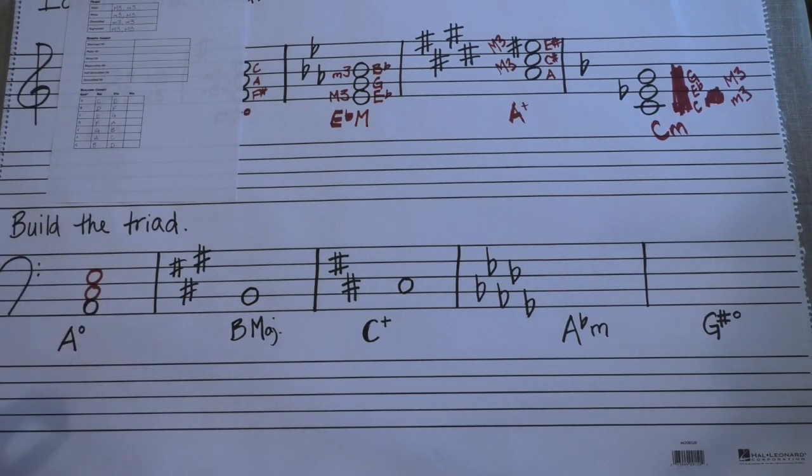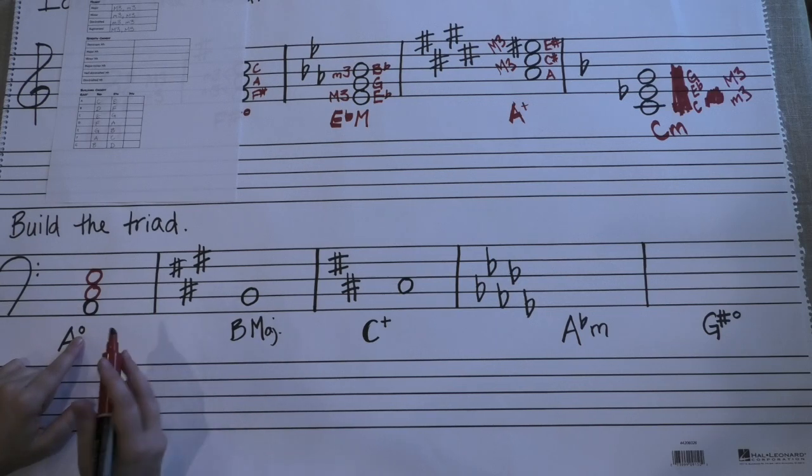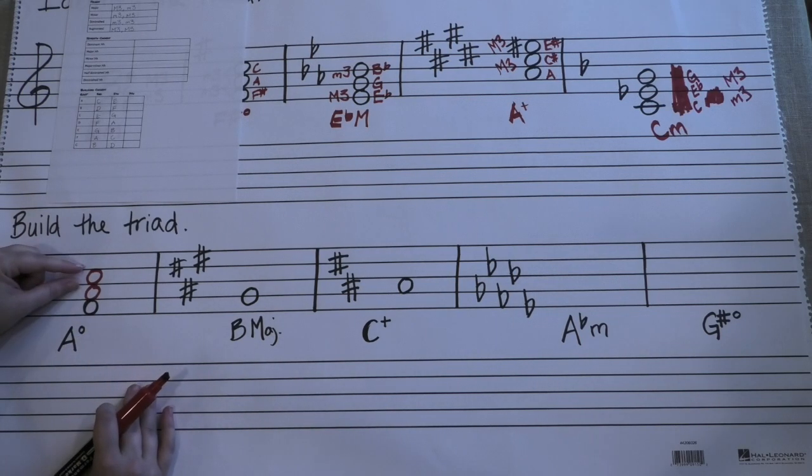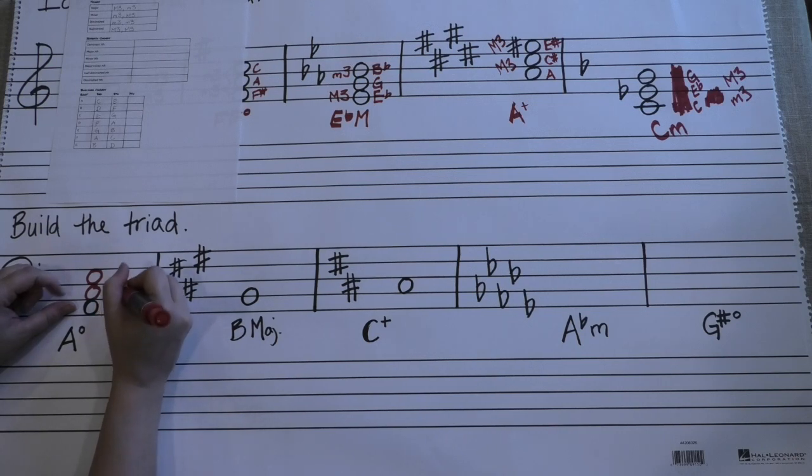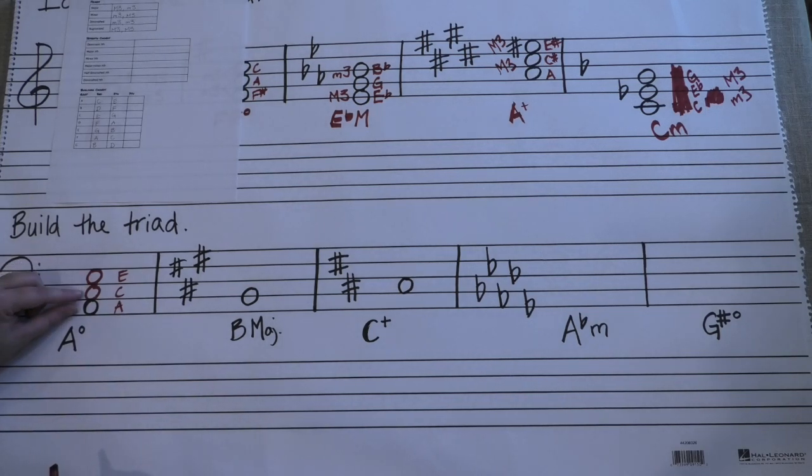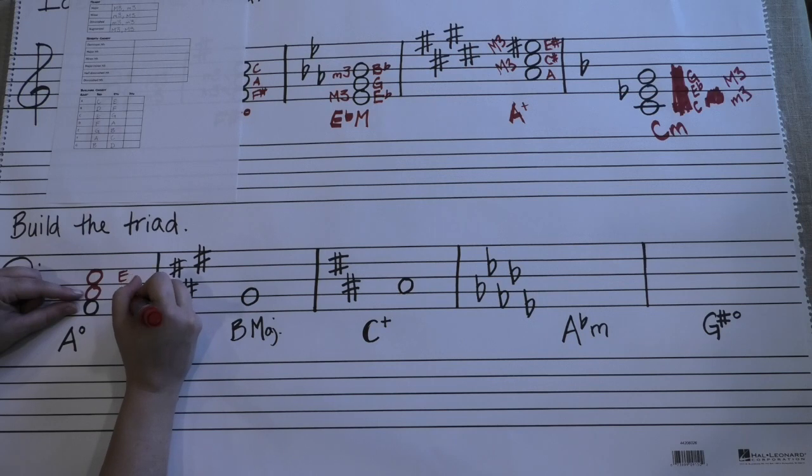We know that that's some sort of an A chord. Now we use accidentals if necessary to make it what we need it to be. So if we want a diminished chord, we want two minor thirds on top of each other. We have an A, we have a C, and we have an E. Let's see how close we are to start out with and then adjust from there.